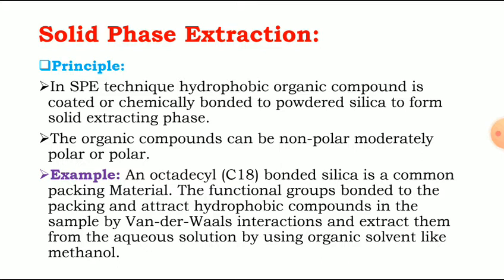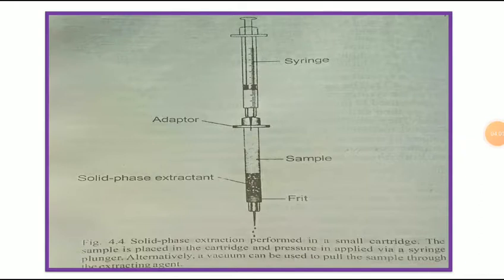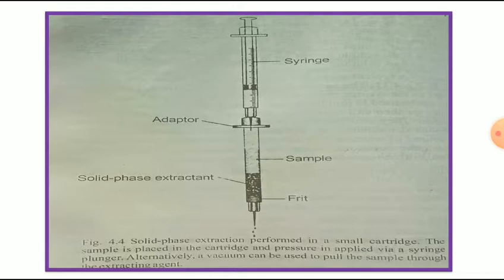This is the principle of solid phase extraction. Now we will look at the schematic diagram of the solid phase extractor. It is a small cartridge-type device. The sample is placed in this cartridge and pressure is applied via a syringe. Alternatively, a vacuum can be used to pull the sample through the extracting agent.